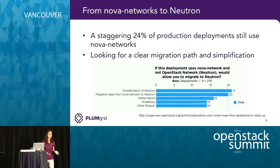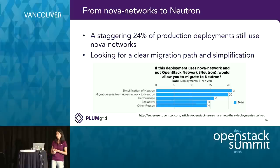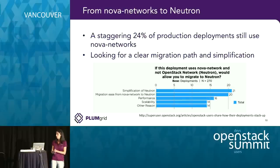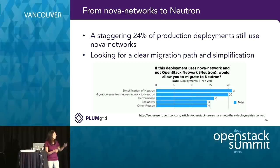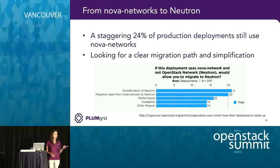According to the recent user survey that came out on Monday, a staggering 24% of users are still using Nova Networks. As a community, it's important to be familiar with Nova Networks and what they can give you. Users say they will consider moving to Neutron once two things happen: one, there has to be a clear migration path; and two, there has to be a simplification of Neutron itself.